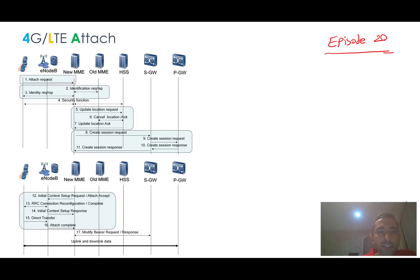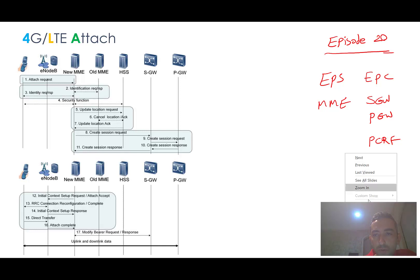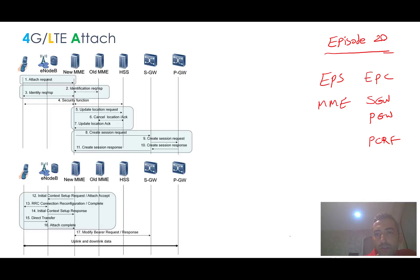Hello ladies and gentlemen, it's Hamid Rezaboul Hassani, and welcome to episode 20 of the mobile networks overview course. In the previous episodes we talked about EPS (Evolved Packet System) and the network elements of the Evolved Packet Core such as MME, SGW (S-Gateway), P-Gateway, PCRF, and so on. We also talked about some famous protocols like GTP and Diameter and their protocol stacks.